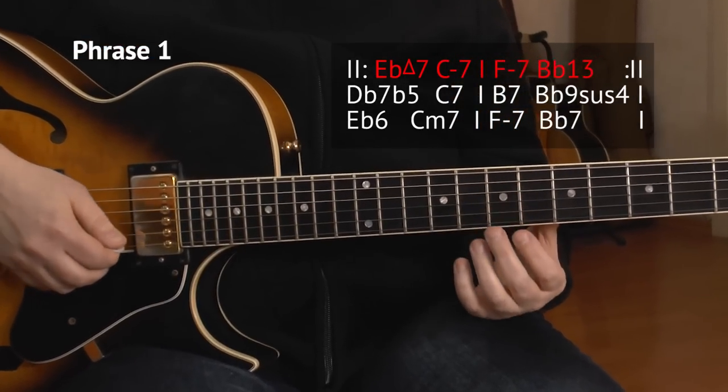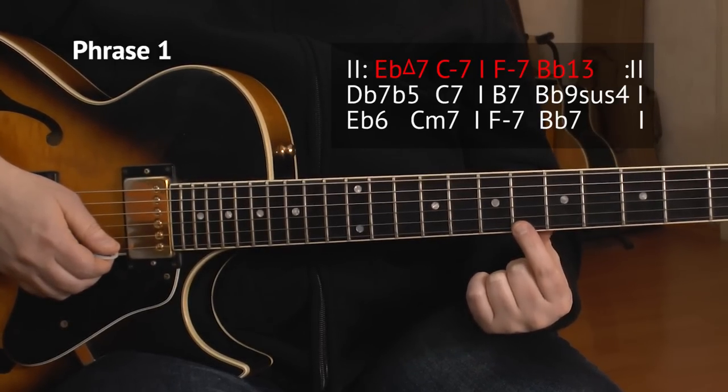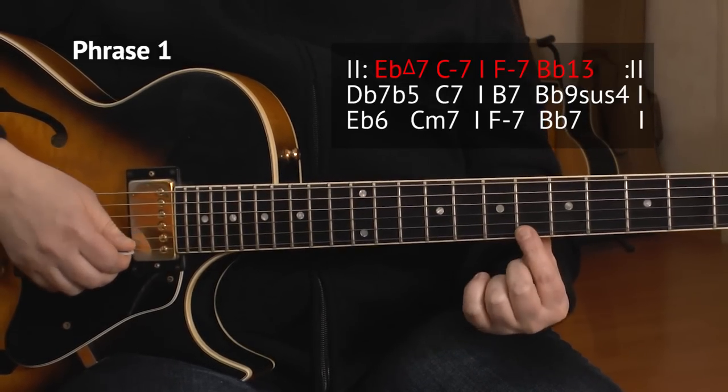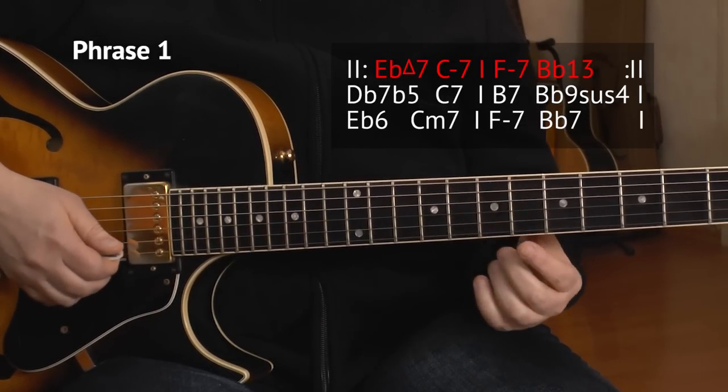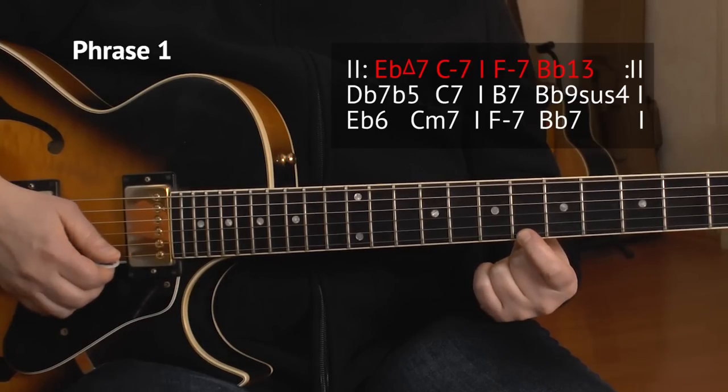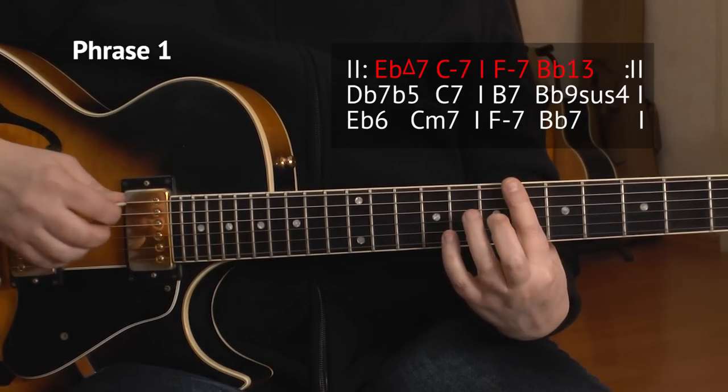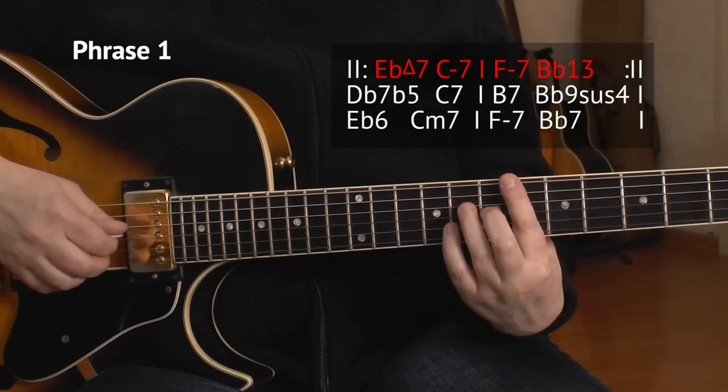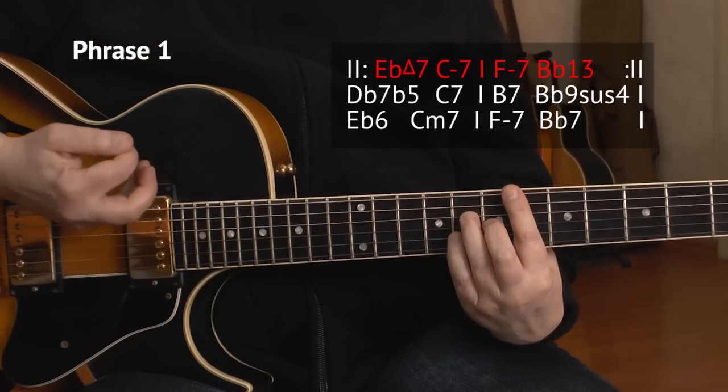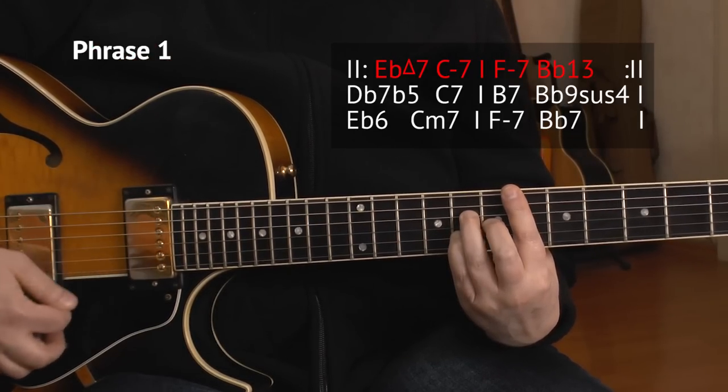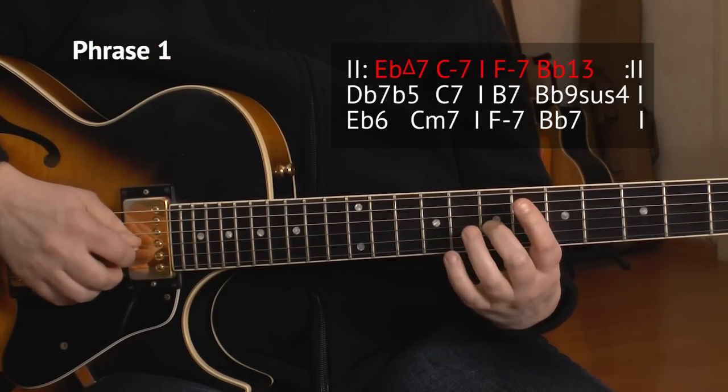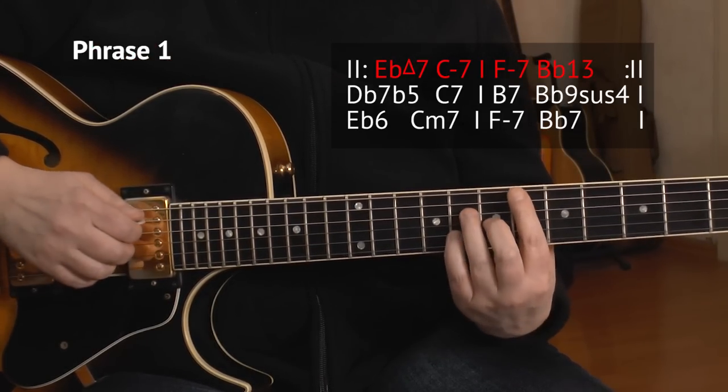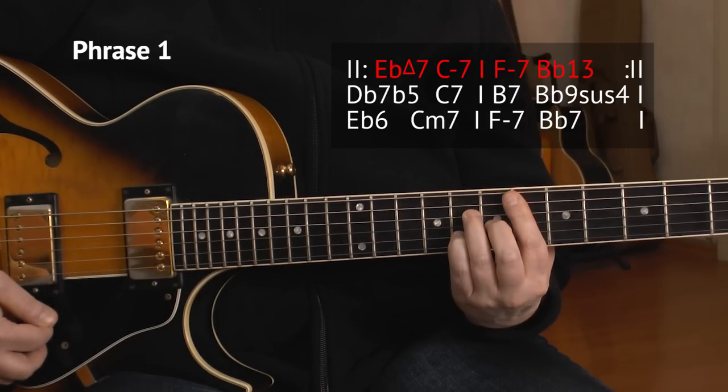We start with a pickup note on the 6th fret of the E-string, and I already bar it, so I play it like this, but I just play this note, the 6th of the E-string. Because now I can add my other fingers for a perfect E-flat major 7 chord. That's 6th, 8th, 7th, 8th, 6th from the A-string.